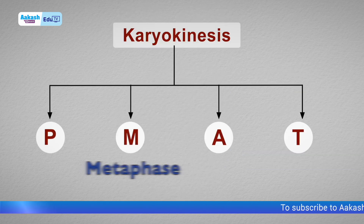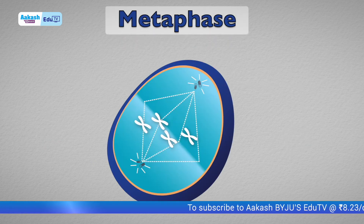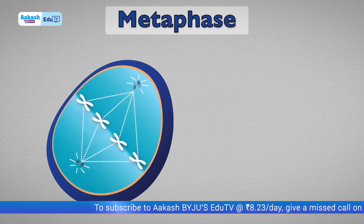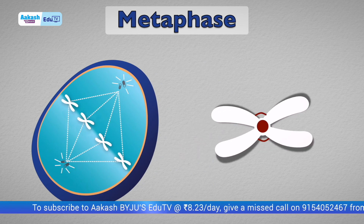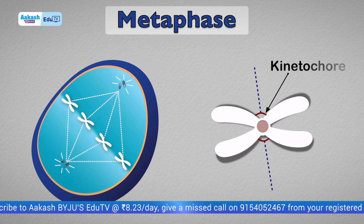Coming to the next stage, metaphase. During metaphase, all chromosomes align at the equator of the cell. This is because of the spindle fibers which are attached to the kinetochore.